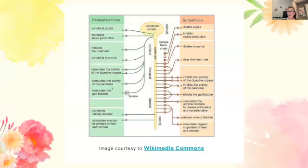I have a graphic here — you may want to pause to have a look. It shows the parasympathetic and sympathetic nervous systems and basically what they do and how signals travel from the brain through the spinal cord. It's a really great graphic to help you understand what is happening and where everything is going.